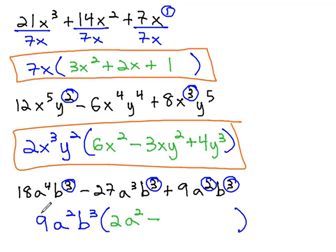Minus 27 divided by 9 is 3. a³ divided by a² is a, and the b³ divides out completely.